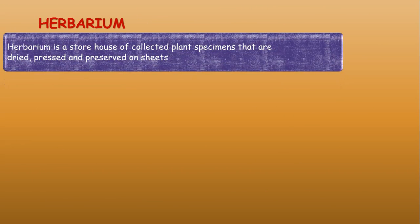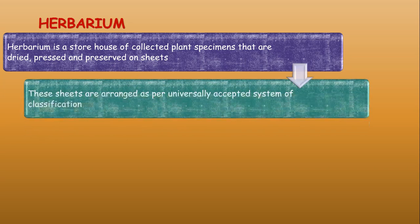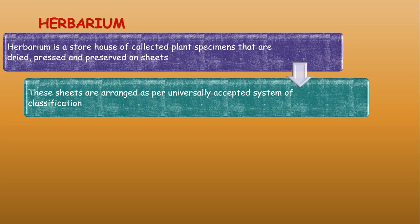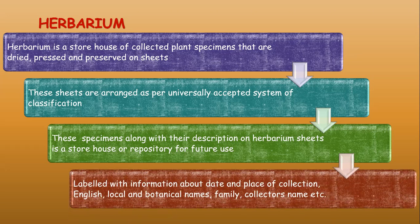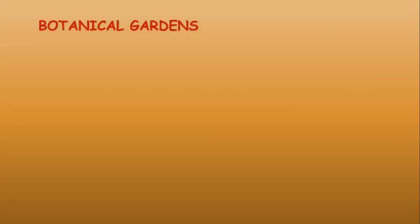Biologists have established certain procedures and techniques to store and preserve information and specimens using taxonomical aids. The first aid is the herbarium, which is a storehouse of collected plant specimens that are dried, pressed, and preserved on sheets arranged as per a universally accepted classification system. Specimens along with their descriptions on herbarium sheets are labeled with information about the date and place of collection, English, local, and botanical names, family, and collector's name.